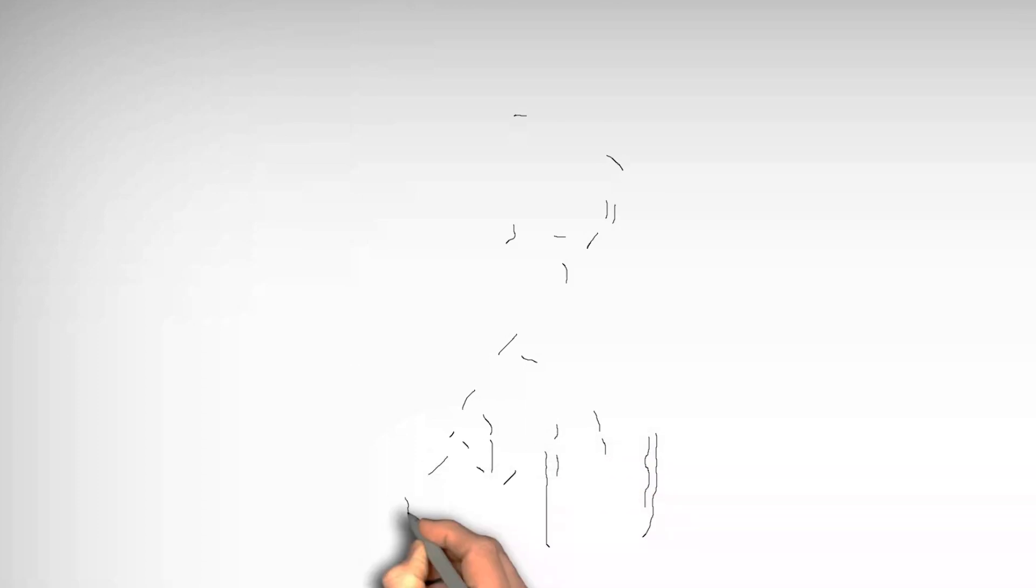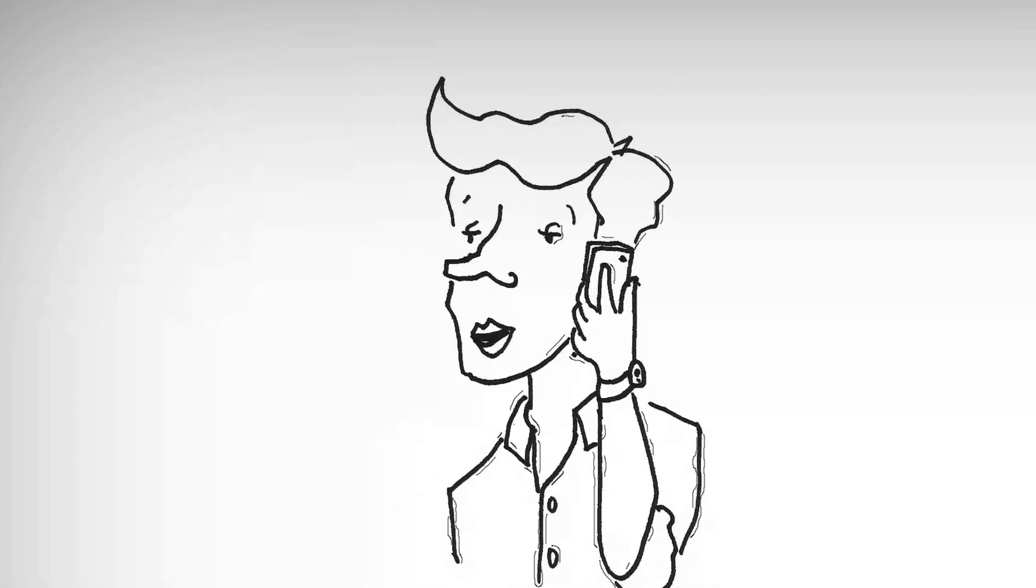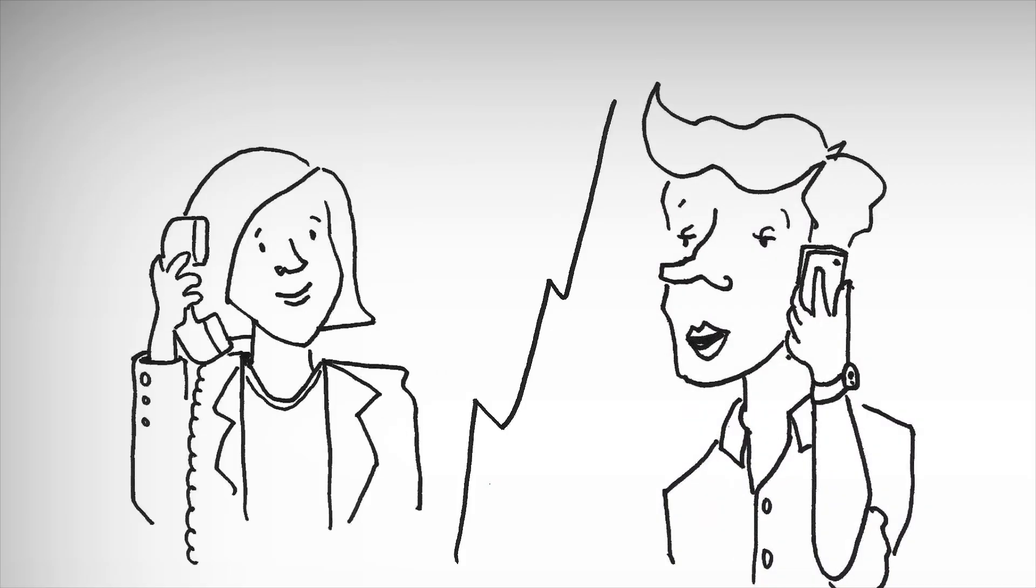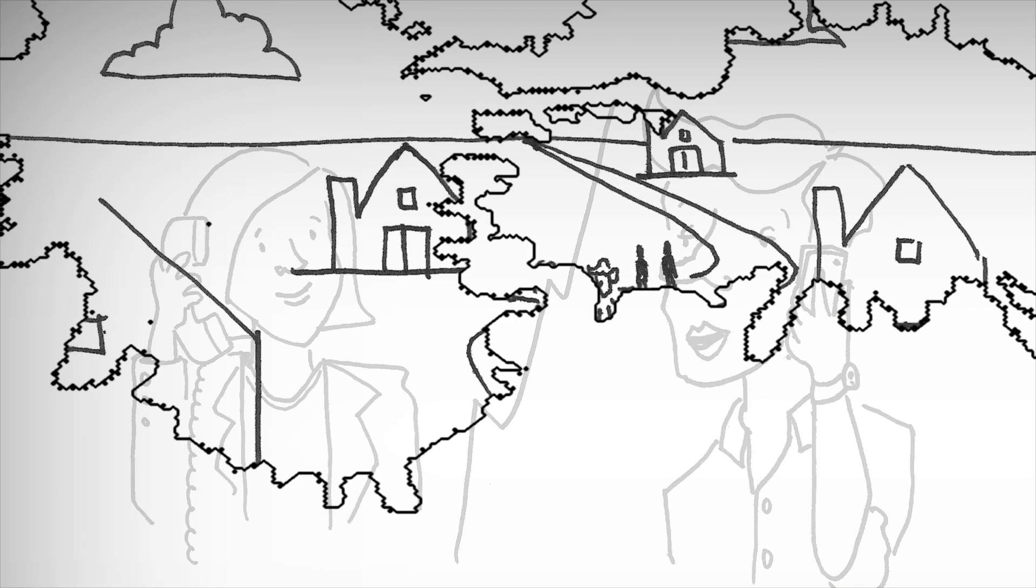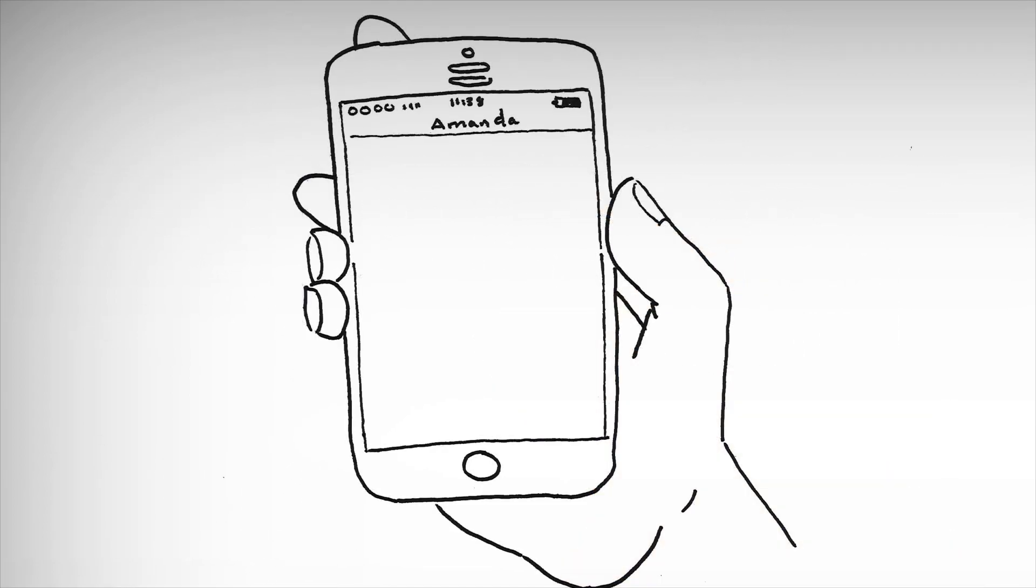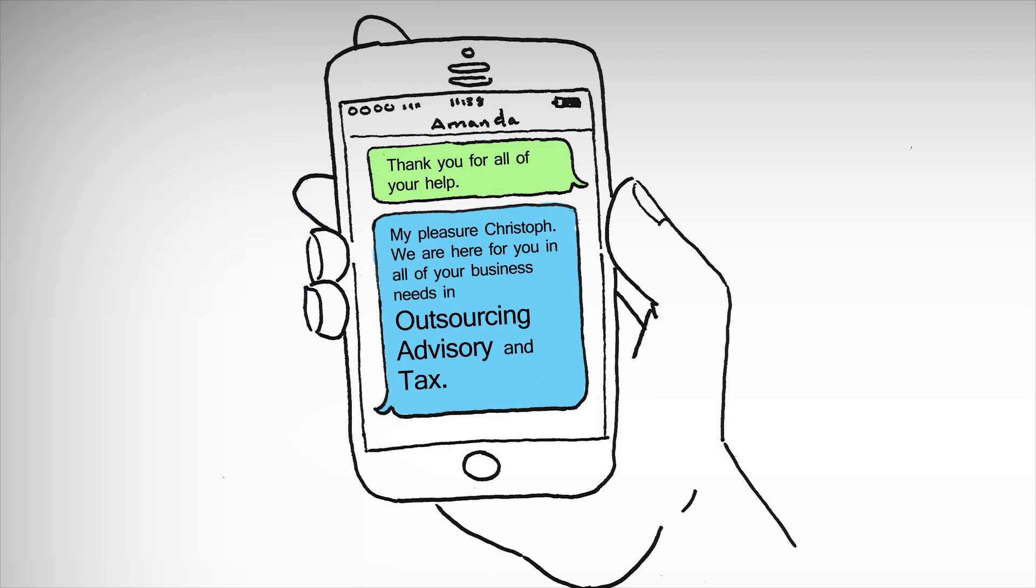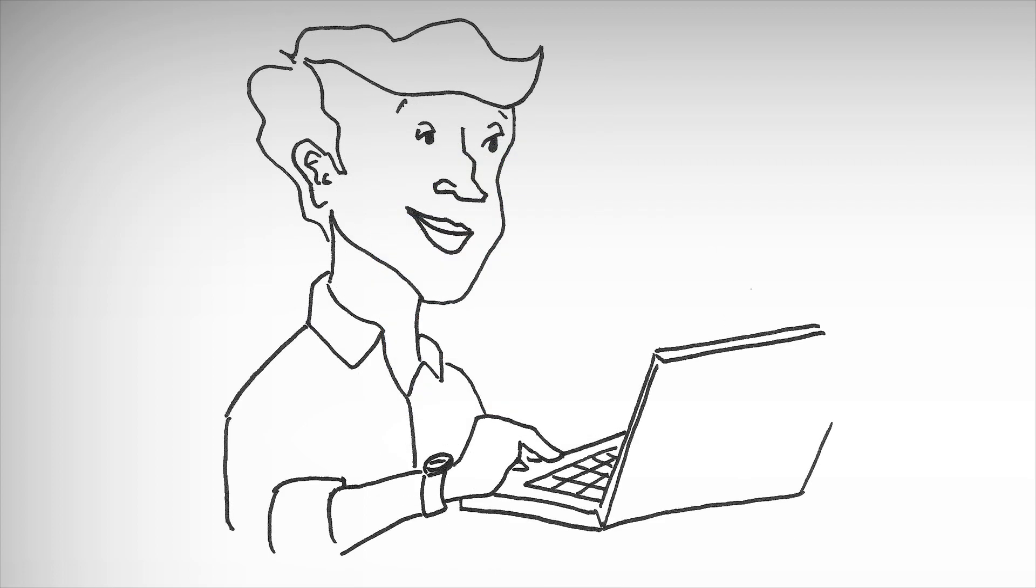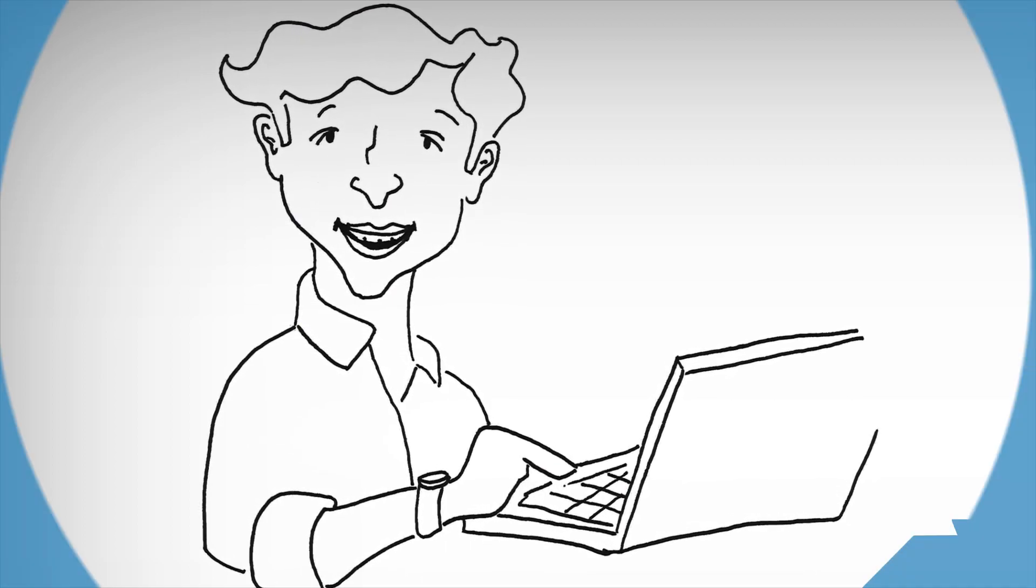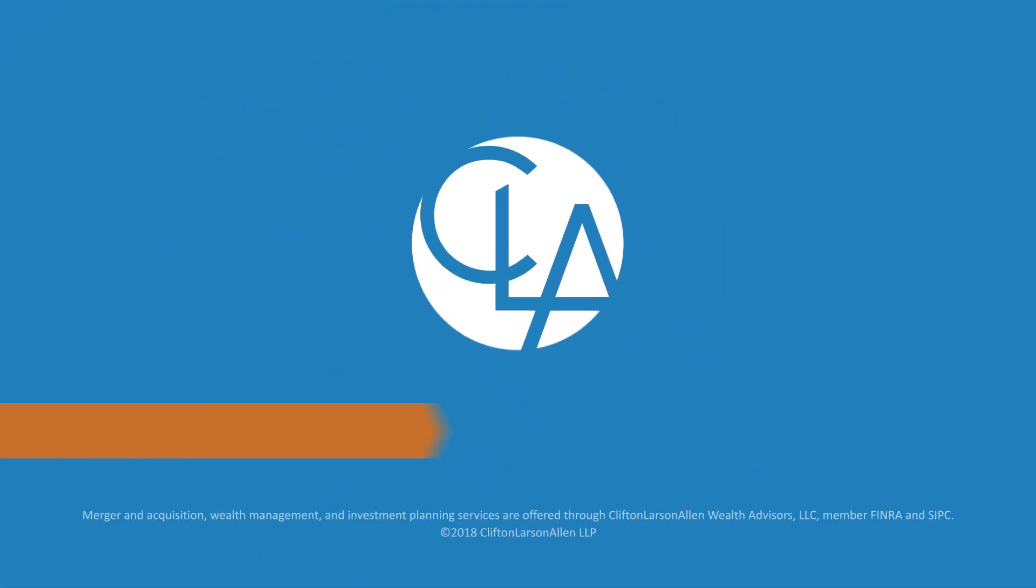At each step in the process, Christoph contacted Amanda with questions, and she was able to provide answers, resources, and solutions to help make the business successful. Christoph's business began to thrive in the United States, and the CLA team has continued to help him with numerous outsourcing, advisory, and tax needs. Christoph is excited about the future of his company and knows that CLA will be there to support him every step of the way.